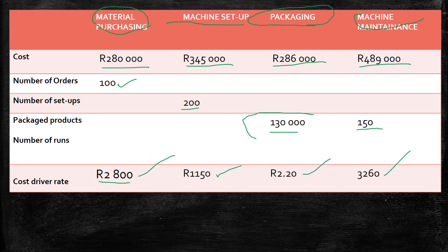There is a question about how we arrived at 130,000 packaged products, since this was not directly given. Going back to the information: 30,000 units of Maturikisi were sold plus 15,000 units in closing inventory equals 45,000 units produced; and 65,000 units of Sugar were sold plus 25,000 units in closing inventory equals 90,000 units produced. Adding both together gives us 130,000 packaged products for the year. Not all were sold, but simply not selling them does not mean it did not cost us.